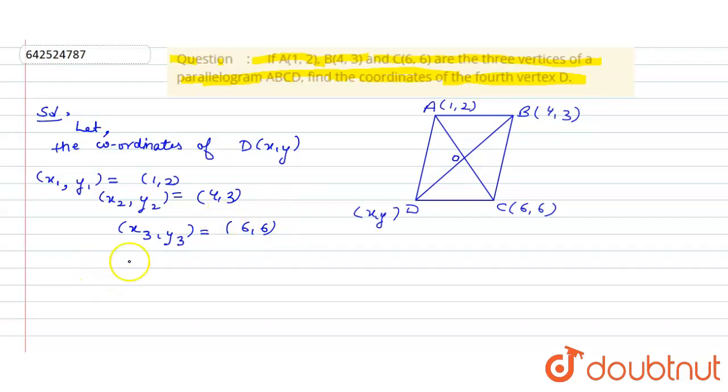we know that from the property of parallelogram, midpoint of A, C which is O and midpoint of B, D is also O is equal. That is midpoint of A, C is equal to midpoint of B, D.